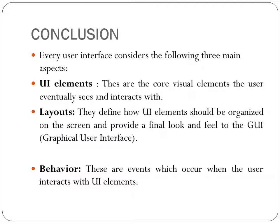In this video tutorial we familiarized various AWT controls. Every user interface has three main aspects: UI elements or controls (the core visual elements the user sees and interacts with), layout (defines how these elements are organized on screen for the final look and feel of the GUI), and behavior (the events which occur when the user interacts with UI elements). In the next video session we will discuss remaining AWT controls like Choice, Scrollbar, TextArea, TextField, etc.